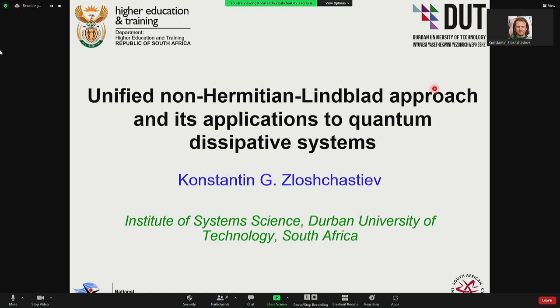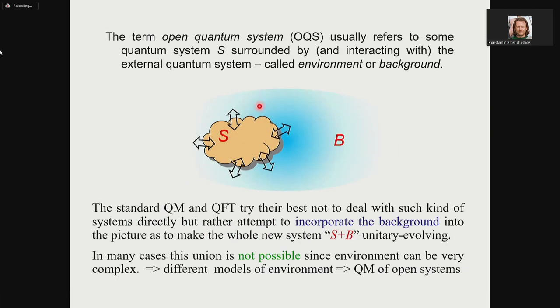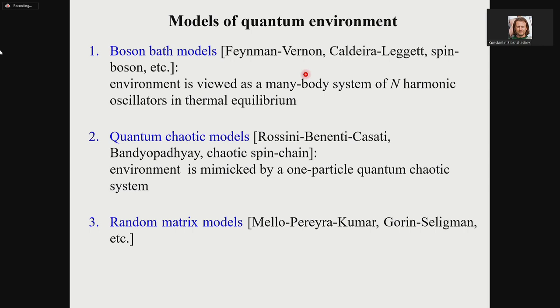Open quantum systems usually refers to some quantum system surrounded and interacting with the external quantum system called environment or background. The standard quantum mechanics and quantum field theory try to incorporate the background into the picture to make the whole system plus environment unitary evolving. Unfortunately, in many cases it's not possible because environment can be very complex. Therefore, we need different models of environment, and here comes quantum mechanics of open systems.